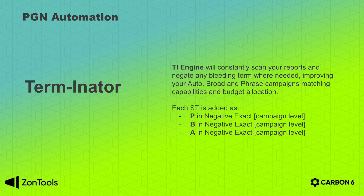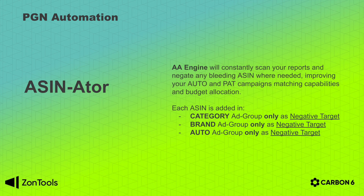Then we have the terminator and ASINator engines, which are the opposite of the second and third engines — we find the search terms that make you bleed money, search terms that are not relevant or not converting, and negate them. The terminator will act on the customer search terms report: whenever we find a search term that is not behaving we will negate it in your phrase and exact campaigns, negate it in the broad campaign as negative exact, and negate it in the auto campaign as negative exact match so you don't bid on that specific search term ever again. The same applies to the ASINator, which will constantly scan your reports and negate any bleeding ASIN where needed, improving your auto and PAT campaigns.